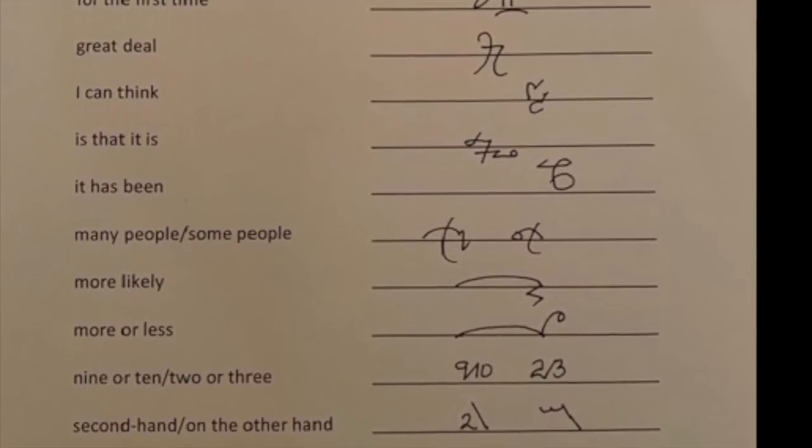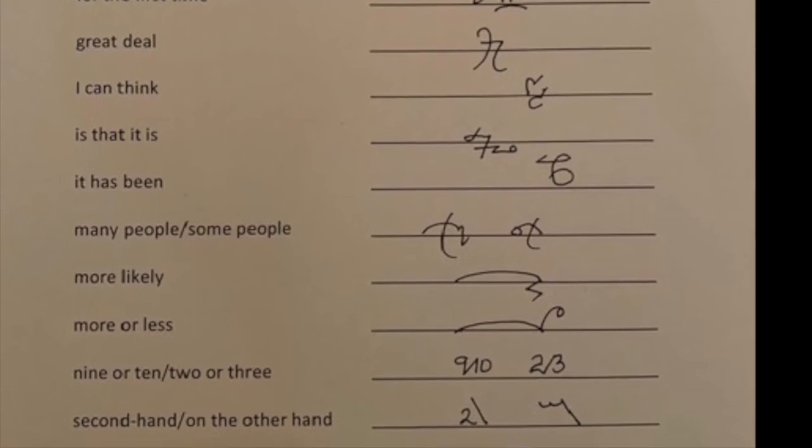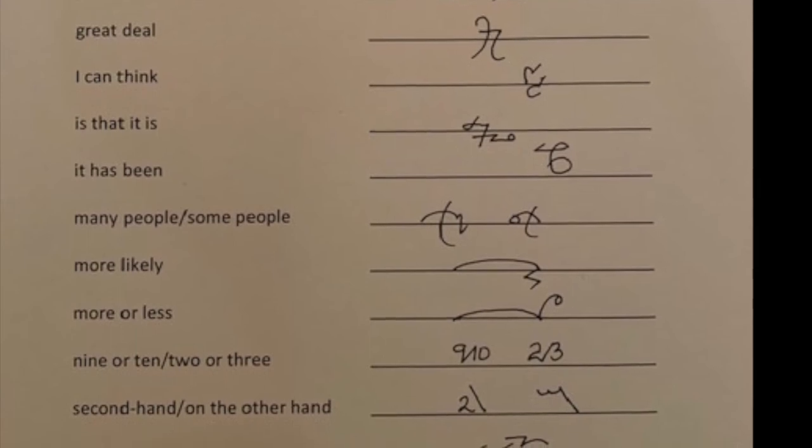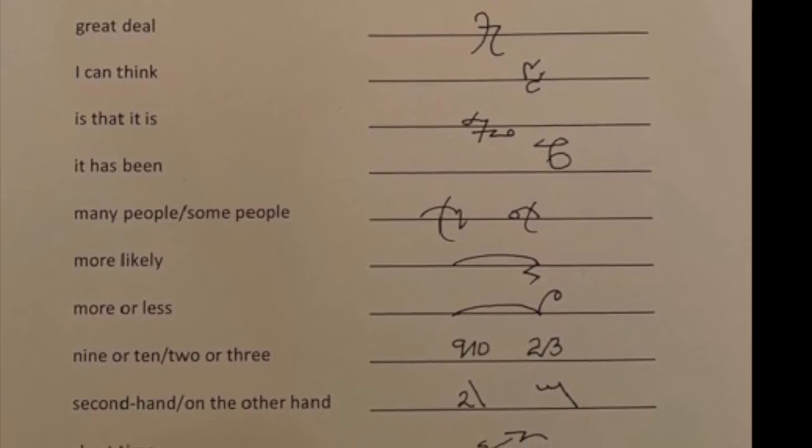MORE OR LESS. After the M, the L goes upwards, so we miss out the tiny word again, we miss out the OR and we write MORE LESS.